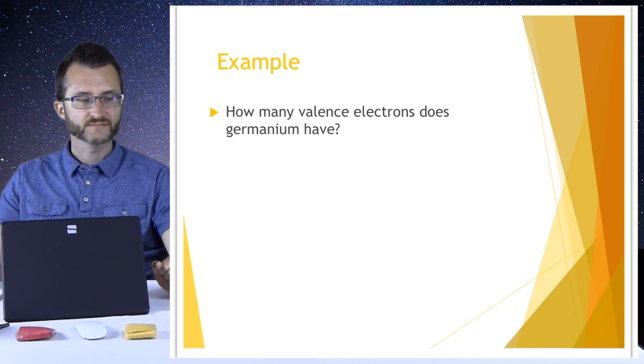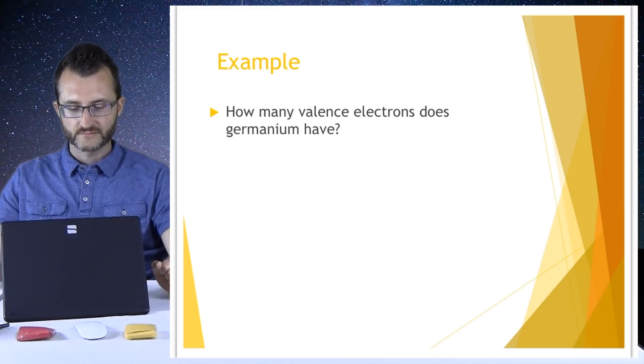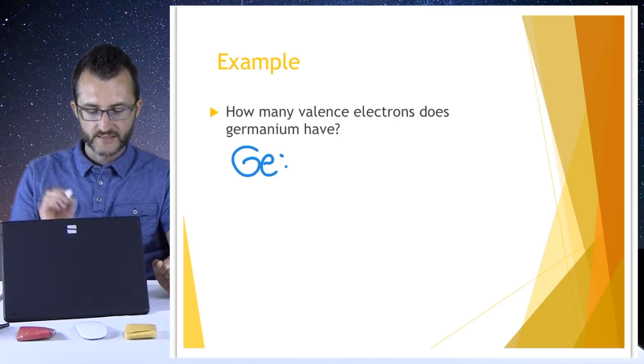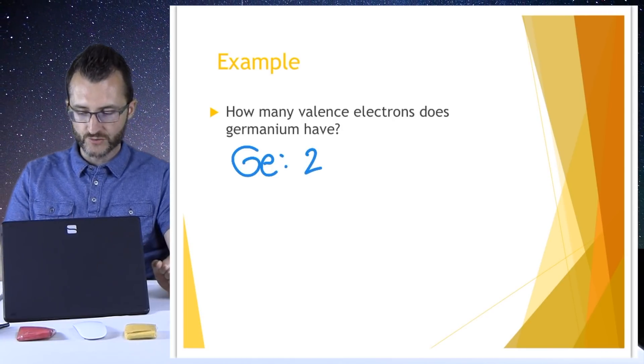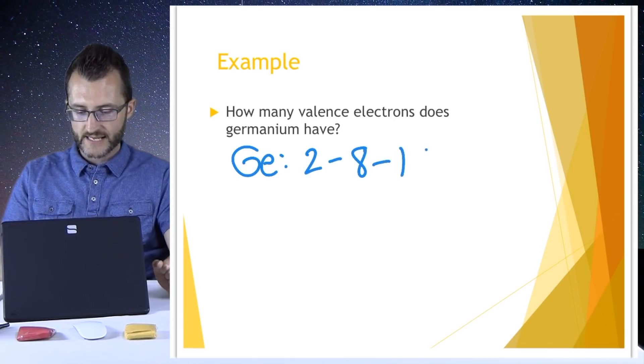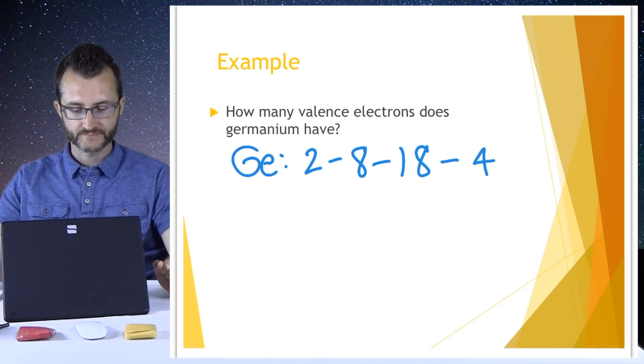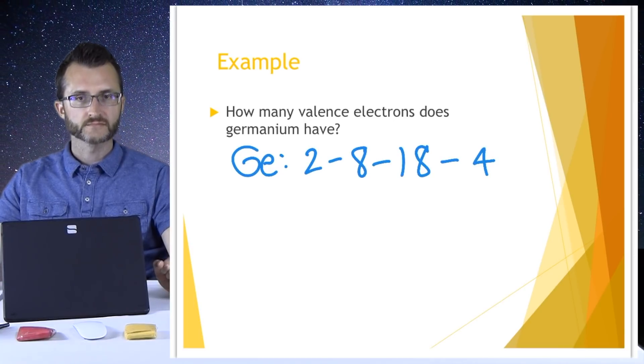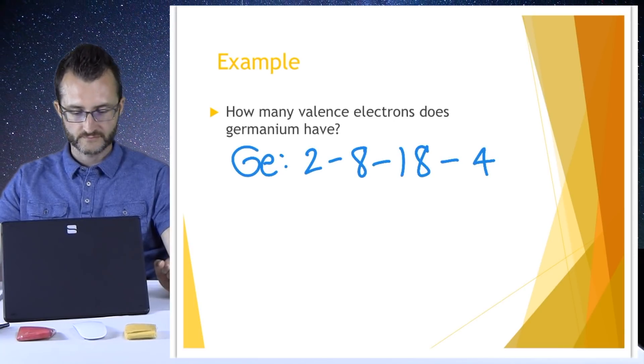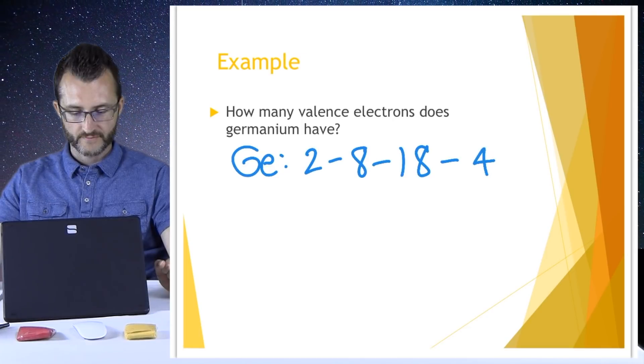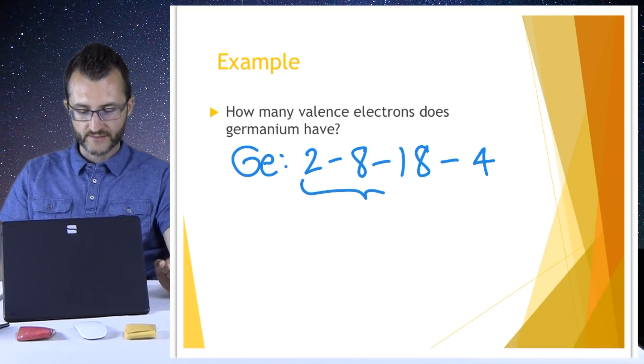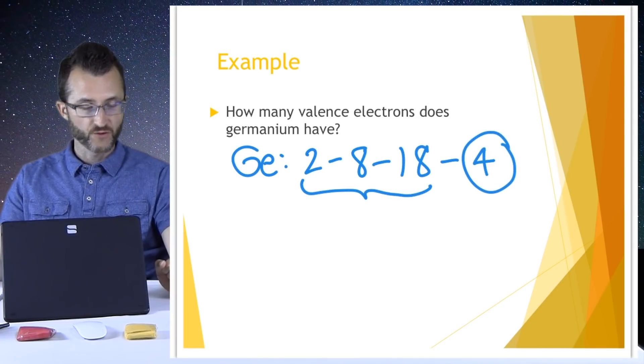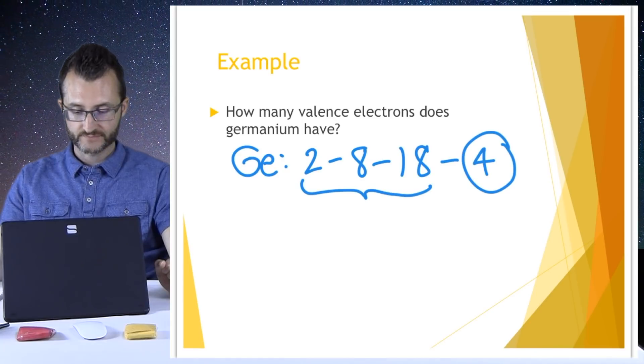How many valence electrons does germanium have? So we need to look up germanium on our periodic table and find its Bohr electron configuration. So germanium is Ge. And right off of the periodic table it says 2-8-18-4. So since it's off of the periodic table, we know that this is in the ground state. So which ones of those electrons are our outermost or valence electrons? So all these ones are kind of those inner core electrons. So not those. So what's left in the last shell would be 4 valence electrons. That's correct. It's easy as that.